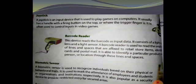Next we have a barcode reader. This device reads barcodes as input data. It consists of a light source, a lens, and a light sensor. The barcode reader is used to read the small images of lines and spaces that are affixed to retail store items.